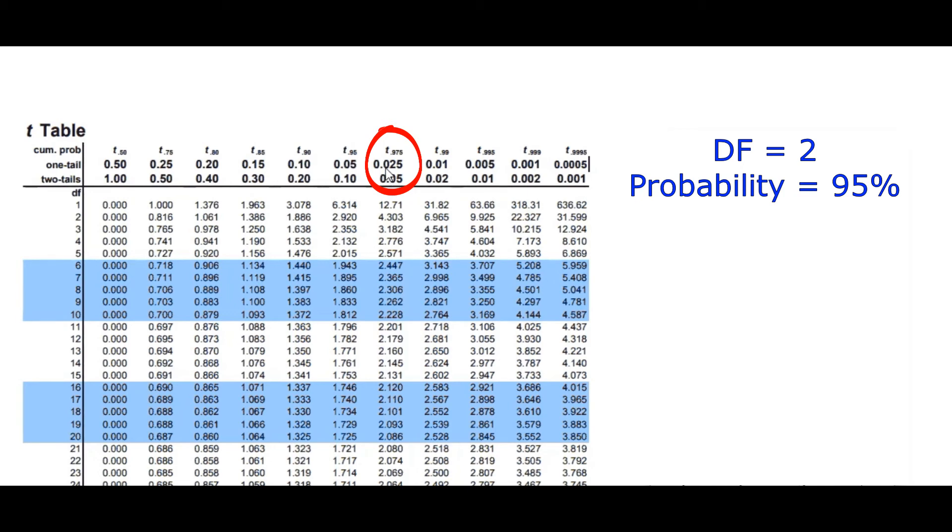but also 0.025 on the lower limit. So you're looking at the middle 95%, and that's what the two-sided score here is. And in this case, for two, you see that it matches at 4.303.